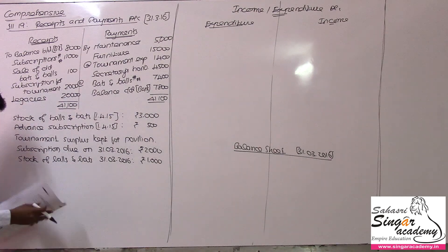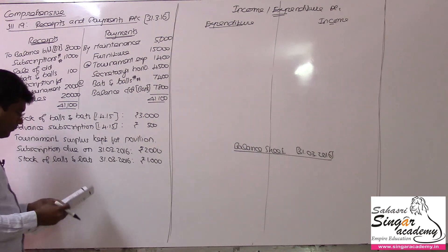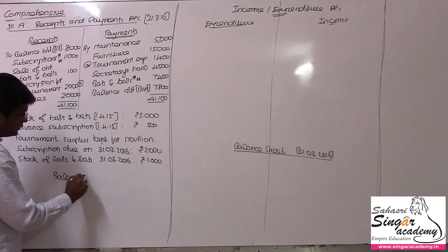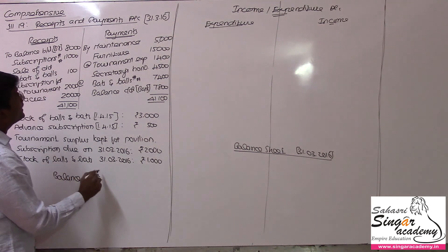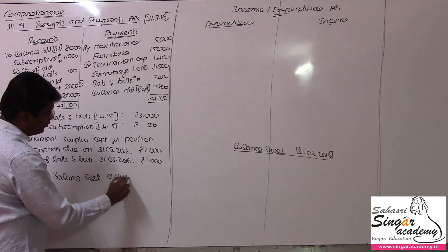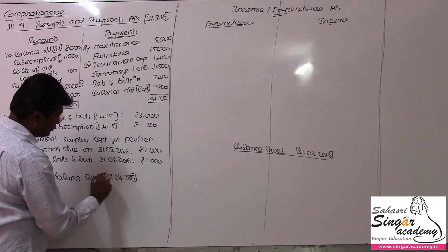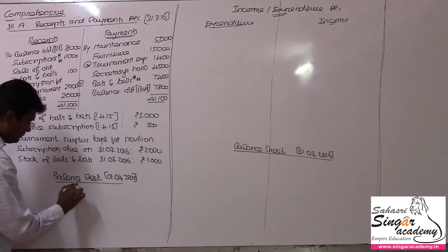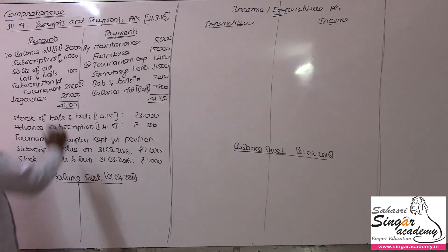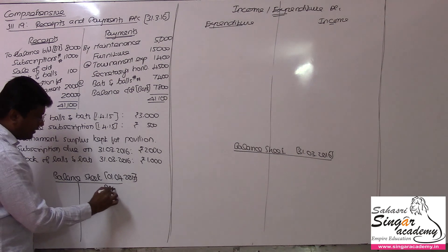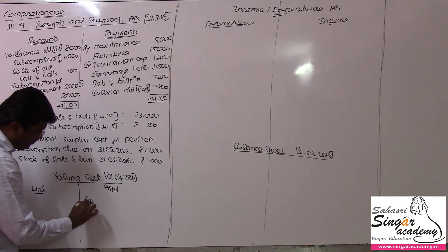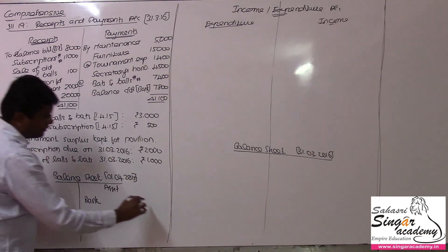Opening balance sheet: it is better to open the opening balance sheet as on 1-4-2015. Balance in the bank account at the beginning will be the asset in the opening balance sheet — assets and liabilities. Bank account value being 8,000 is a single entry.